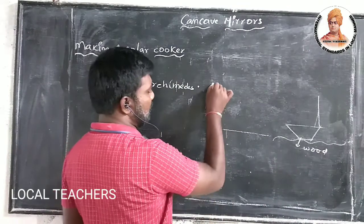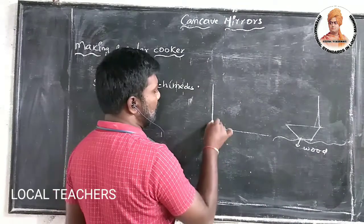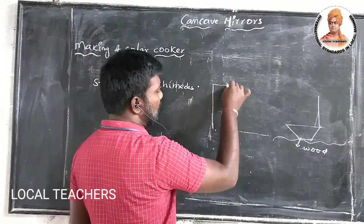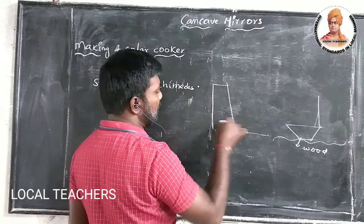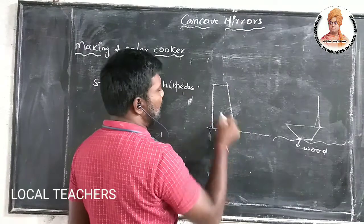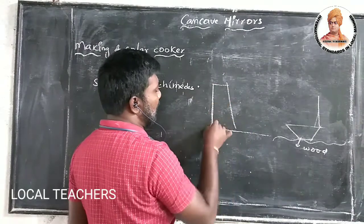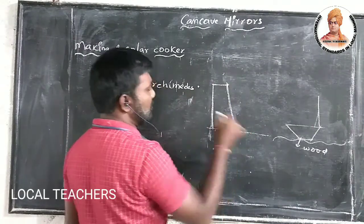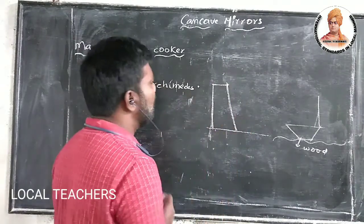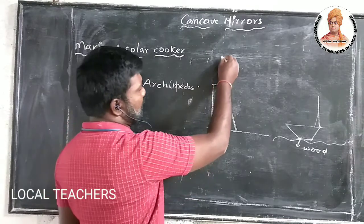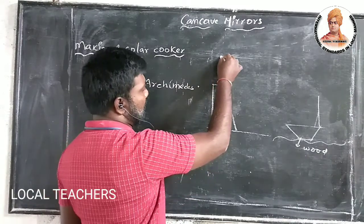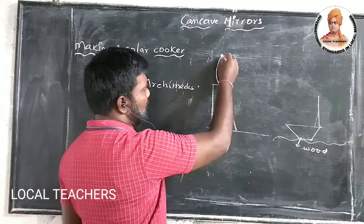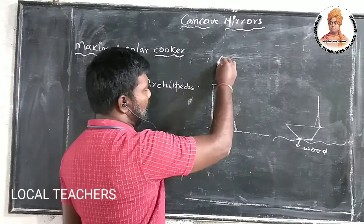Consider here: this is the sea bank. Here we are having some elevated high places, and on these high places, large mirrors are placed.